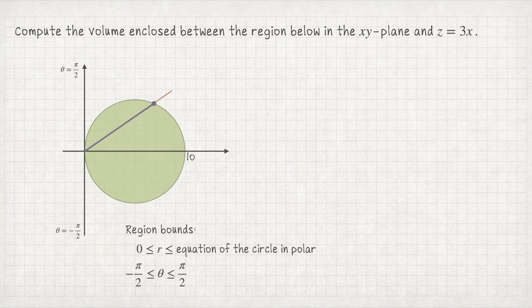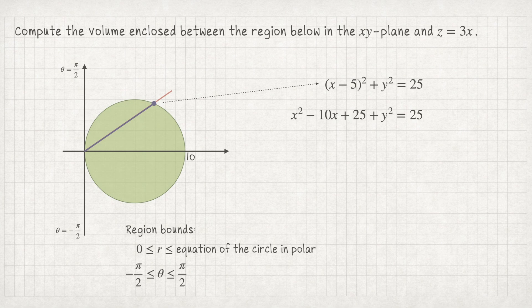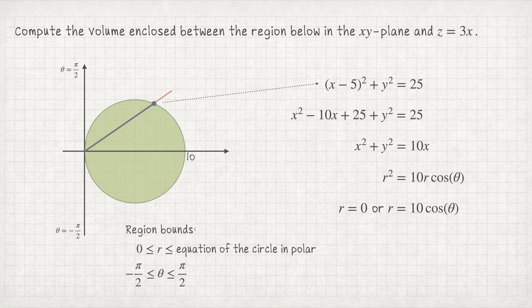To figure it out, let's revisit the circle equation in Cartesian coordinates. The circle with center (5, 0) and radius 5 has equation (x − 5)² + y² = 25. Expanding: x² − 10x + 25 + y² = 25, which simplifies to x² + y² = 10x. Converting to polar: x² + y² = r² and x = r cosθ, so r² = 10r cosθ. Thus either r = 0 (the origin) or r = 10cosθ. That 10cosθ is our upper bound.